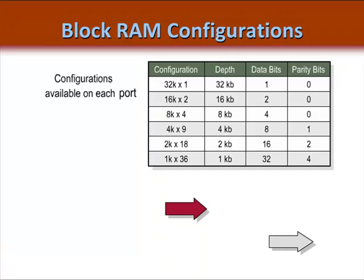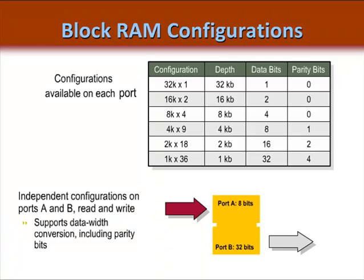This table shows the available memory configurations for each port. Some of the larger sizes support parity bits without extra CLB logic. Note the various sizes of the output ports — if you need a smaller port memory, you simply don't connect the unused bits. One of the most useful features is that each port is entirely separate, independent, and configurable. So in this example, an 8-bit input bus is stored in the block RAM, yet output data is taken out in 32-bit chunks. The data width conversion is done automatically and without extra logic.